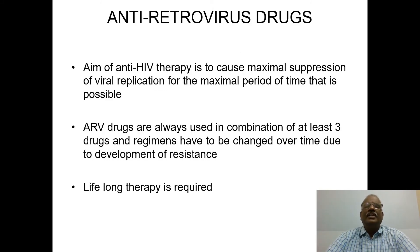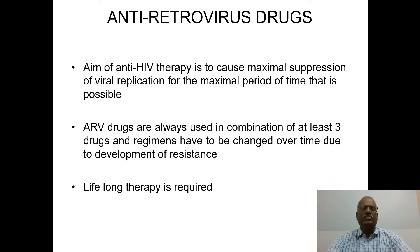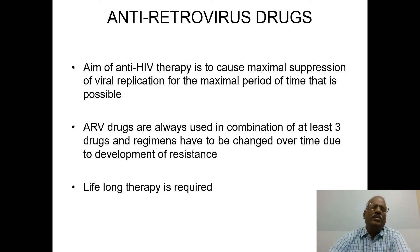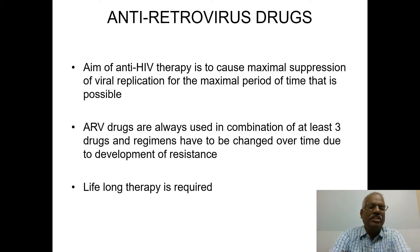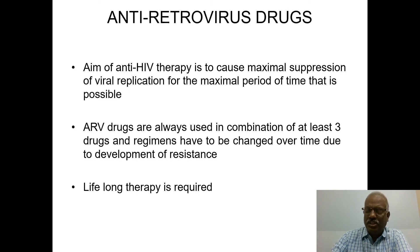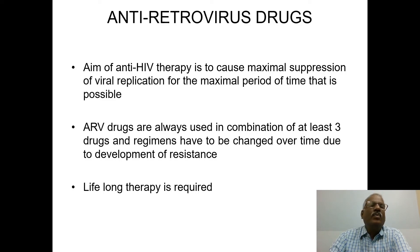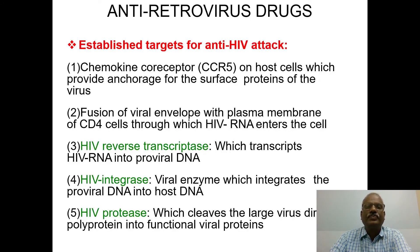Now we come to antiretroviral drugs. There are many drugs used for the treatment of HIV. The important point is that they have to be given in a combination of at least three drugs, which is called a regimen. HIV is a long-lasting chronic infectious disease, and to avoid development of resistance, a combination of at least three drugs must be given.